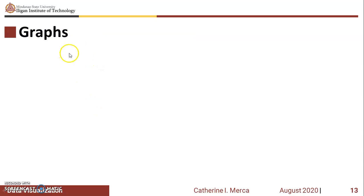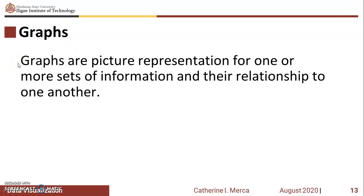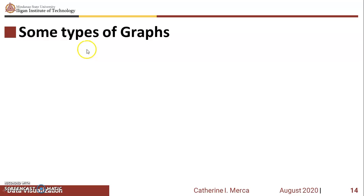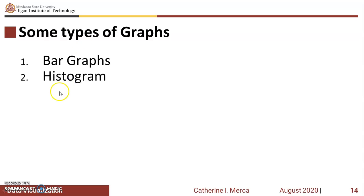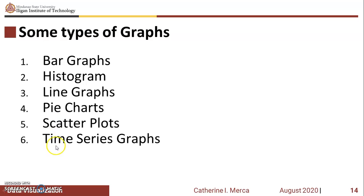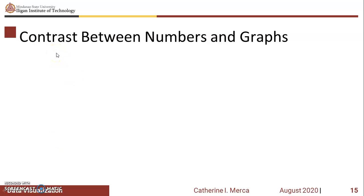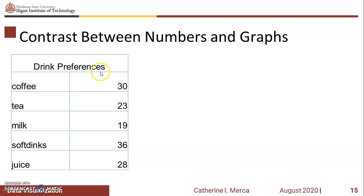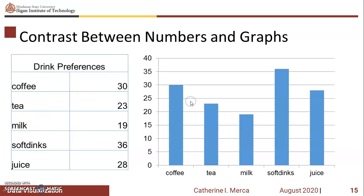We have some types of graphs which we can make use of as data visualization. Graphs are picture representations for one or more sets of information and their relationship to another. There are several types of graphs: the bar graph, the histogram, line graphs, pie charts, scatter plots, and time series graphs. Here is a contrast between numbers and graphs — this table shows drink preferences for coffee, tea, milk, and the likes, and this graph was made using Excel. There is a link below on how to use Excel to make a graph like this.